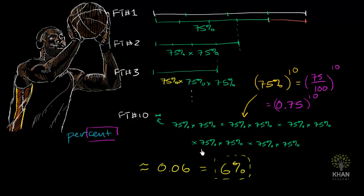Now, what I want to throw out there for everyone else watching this, is to think about how we can make a general statement about anybody. If anybody has some free throw percentage, and they want to say what's the probability of making 10 in a row, how can we say that? Well, I think you saw the pattern right over here.